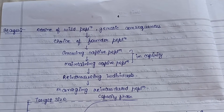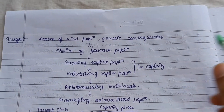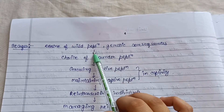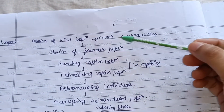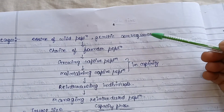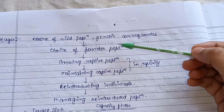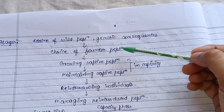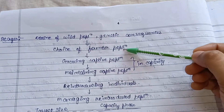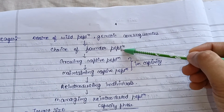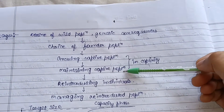The stages in a captive breeding program are: first, there is a decline of a wild population — an endangered animal; second, genetic consequences arise; third, the choice of founder population, identifying a capable population to initiate the captive breeding program.